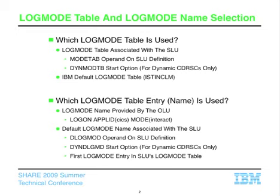Which log mode table entry do we actually use? If the originating LU provides a log mode name, we look that name up inside the SLU's log mode table first, and if we find it, that's the entry we use. If we don't find it there, we'll look it up in the IBM default table, IST-INCLM. For example, someone might do a logon to an APPL and specify mode name INTERACTIVE — that's the OLU providing a log mode name.